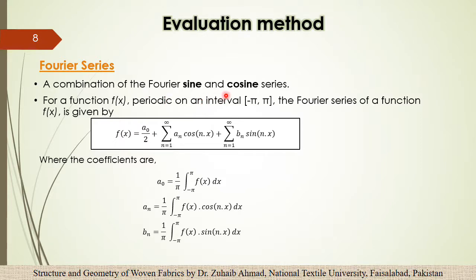It is a combination of Fourier sine and cosine series. For a function f(x) which is periodic on an interval minus pi to pi, the Fourier series of a function is given by this formula, and the coefficients can be found by this formula.